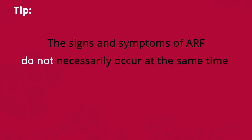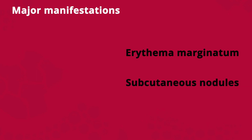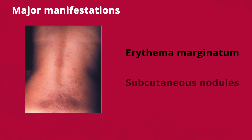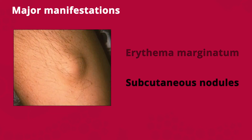The signs and symptoms of ARF do not necessarily occur at the same time. Erythema marginatum and subcutaneous nodules are both rare in Australia. Erythema marginatum is a rash — not itchy or painful — which occurs as circular patterns of bright pink macules or papules on the trunk and proximal extremities. It can be difficult to see on dark skin. Subcutaneous nodules are crops of small, round, painless nodules, often over the elbows, wrists, knees and ankles, that last for one to two weeks. They are rarely seen with ARF, but are highly specific for ARF and strongly associated with carditis.